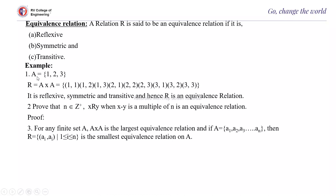Example: let A = {1, 2, 3} and R is a relation on A given by A cross A, which equals {(1,1), (1,2), (1,3), (2,1), (2,2), (2,3), (3,1), (3,2), (3,3)}. This is your A cross A, which is a complete relation.